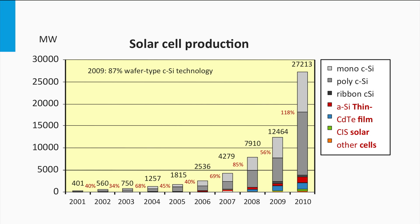The red numbers represent the annual relative increase in production capacity in reference to the previous year. It shows that the production increases annually by more than 40%, which is an unprecedented growth.